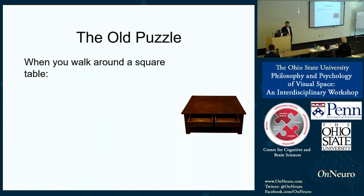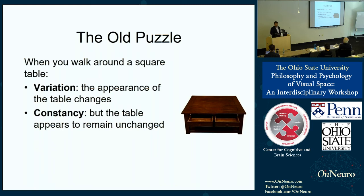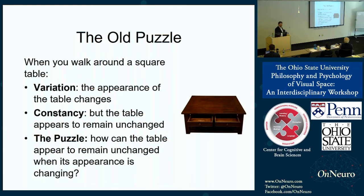And this gives rise to what we're calling the old puzzle: how we can reconcile variation and constancy in the visual appearance of shape. When you walk around a square table, there's a variable aspect — the appearance of the table changes as you walk around it. It looks square when viewed from above, but slightly trapezoidal when viewed from the side. There's also a constant element: the table itself appears to remain unchanged as you walk around it. It doesn't appear to be changing in shape or deforming. How can the table appear to remain unchanged when its appearance is changing?